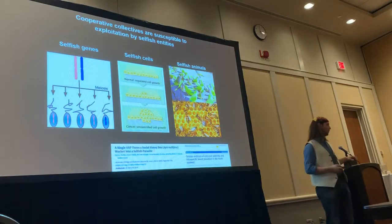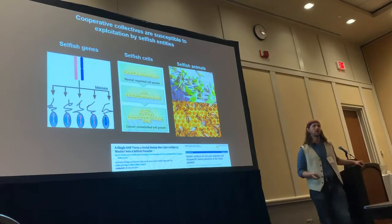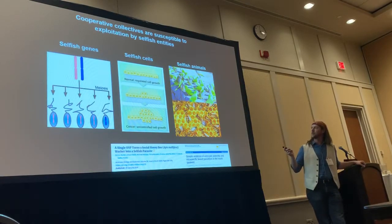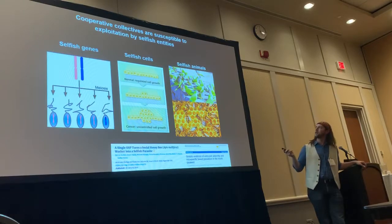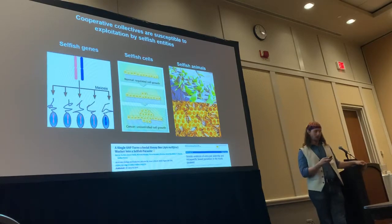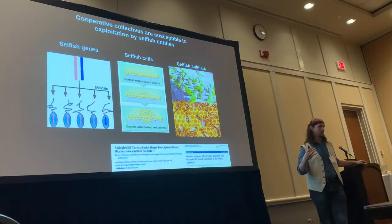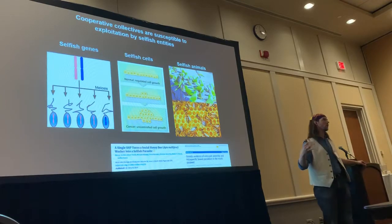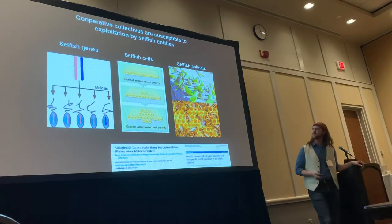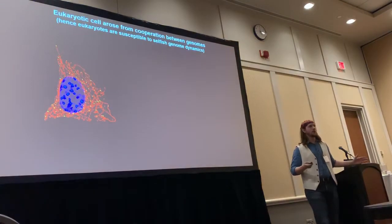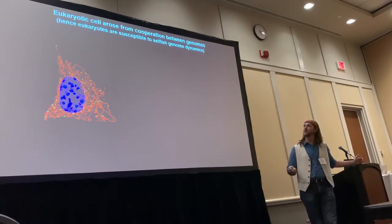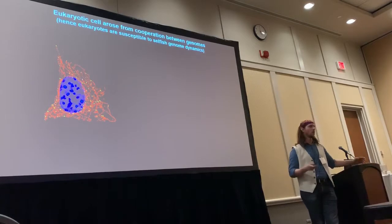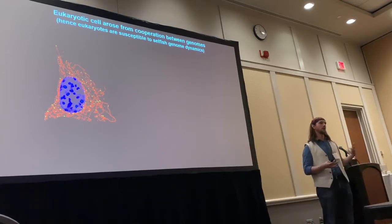And of course, it's possible to have selfish social animals. We've seen examples in the literature of animals like honeybees and birds, like the monk parakeet, for example, both of which have been observed to parasitize other members of even their own species. And of course the eukaryotic cell itself is no exception, because it arose from the cooperation between different genomes.